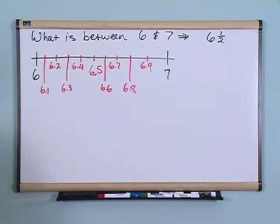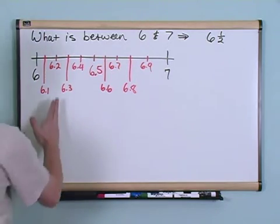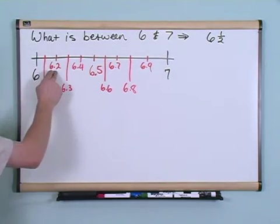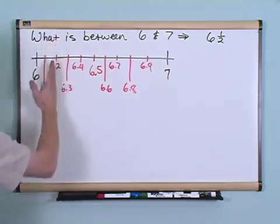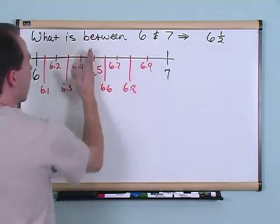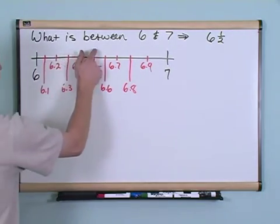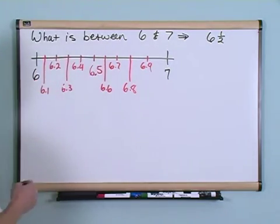So if I were to tell you, go give me 6.2 of something. Well, you're going to know that 6.2 is pretty close to 6. It's not too close to 7. It's kind of over here. 6.5 is going to be right in the middle, and that's kind of why it's 6 and a half, and so on.